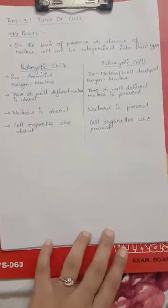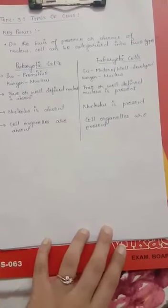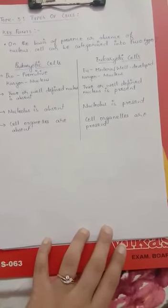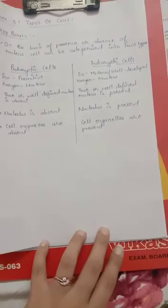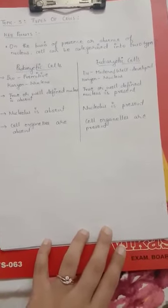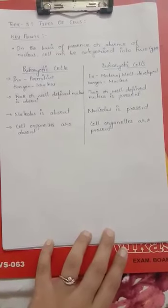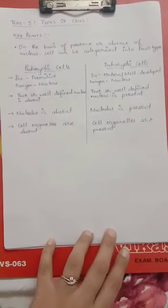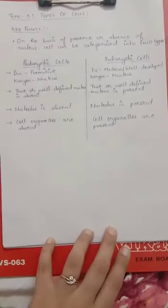Eukaryotic cells: 'eu' means modern or well-developed, 'karyon' means nucleus. So eukaryotic cells are those types of cells which have a properly developed, fully developed, or well-defined nucleus.